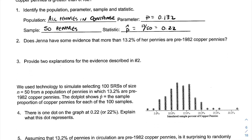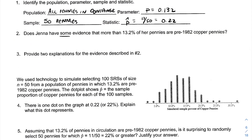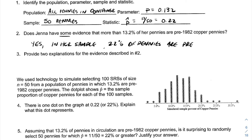Does she have some evidence — not necessarily convincing evidence — that more than 13.2% of her pennies are pre-1982 copper pennies? Put yourself in her shoes: she wonders if it's true, so she grabs a sample and finds she has almost twice as much. Yes, she does have some evidence, because in her sample, 22% of the pennies are pre-1982.